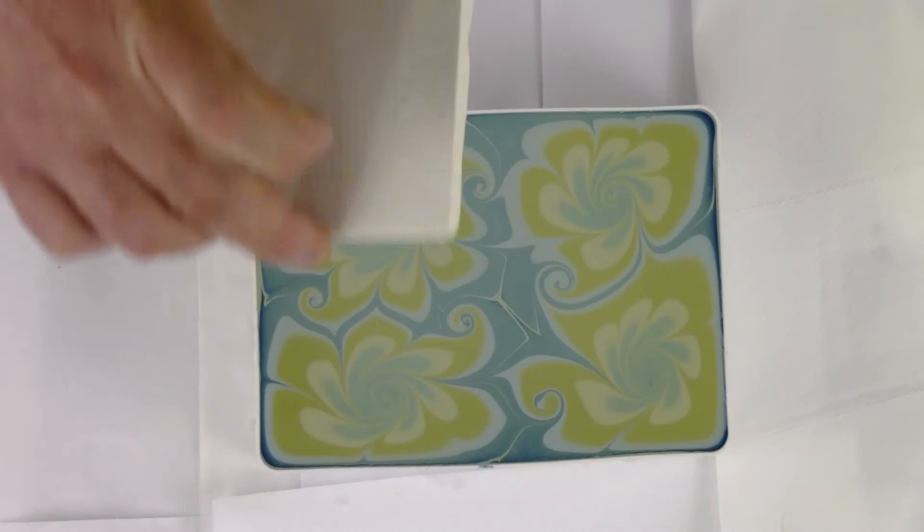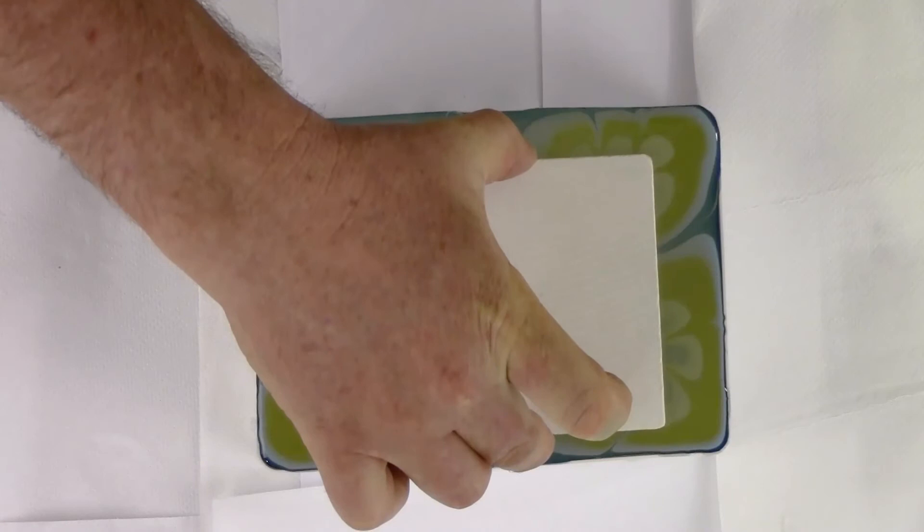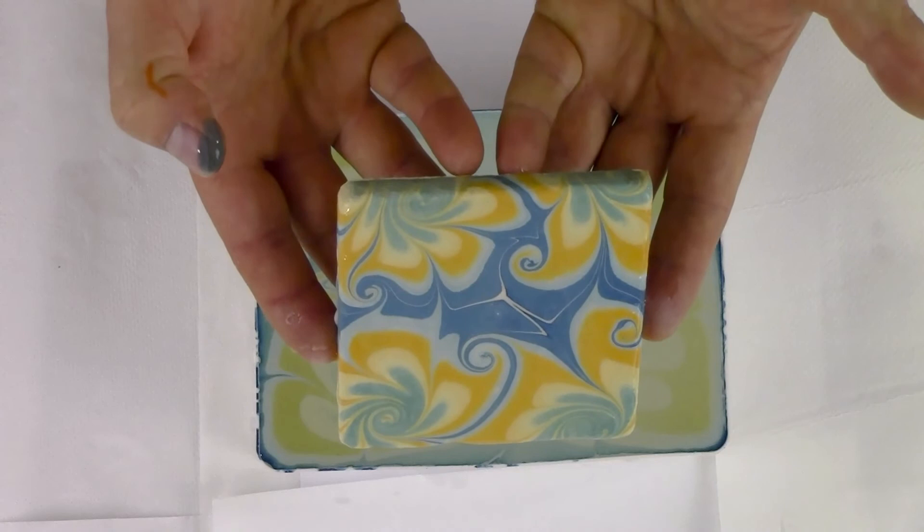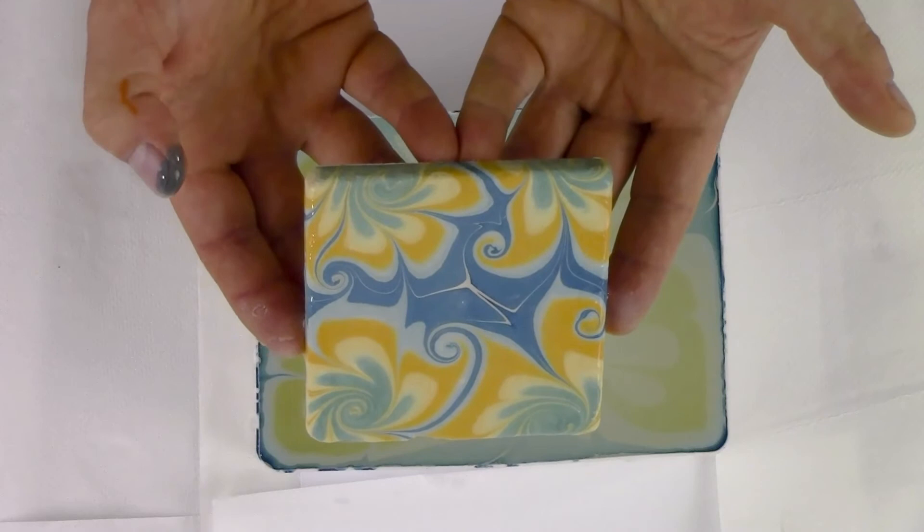And there we have one beautiful tile that is stained for life. How beautiful is that? You can do six to seven hundred tiles per kit on average, depending on how much paint you use.